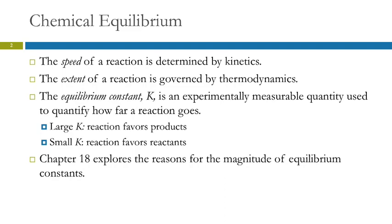Even reactions that don't seem to happen at all — like something doesn't precipitate or doesn't dissolve at all — they may actually go a little bit. So there's not a hard line, but there's sort of a continuum. The magnitude of the equilibrium constant is something we're going to look at in Chapter 18, but now we're going to understand the meaning of a measured equilibrium constant.